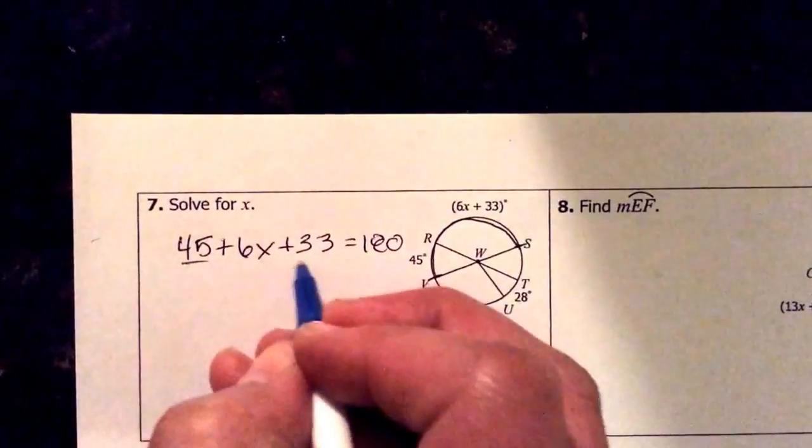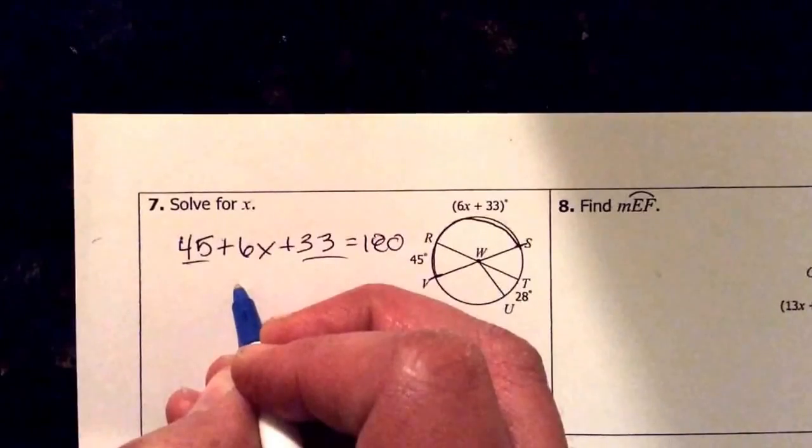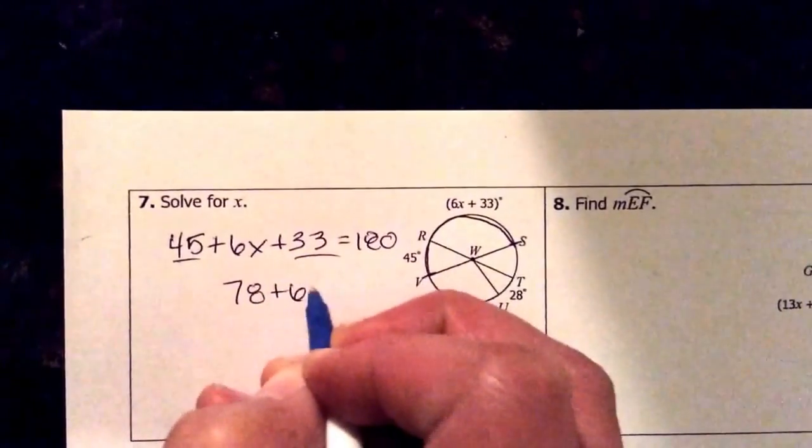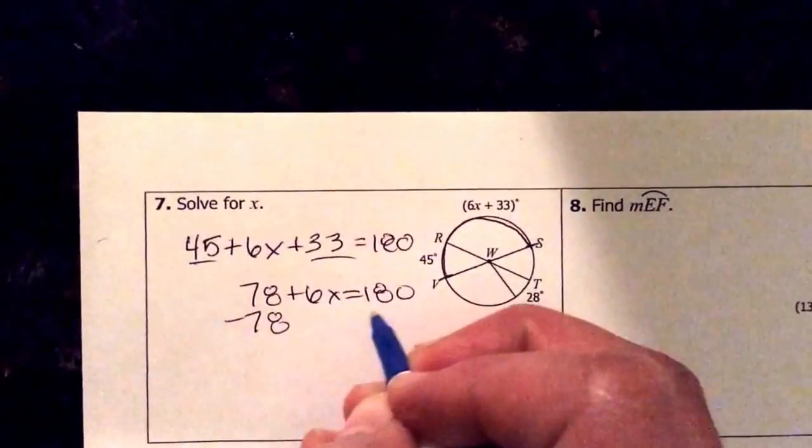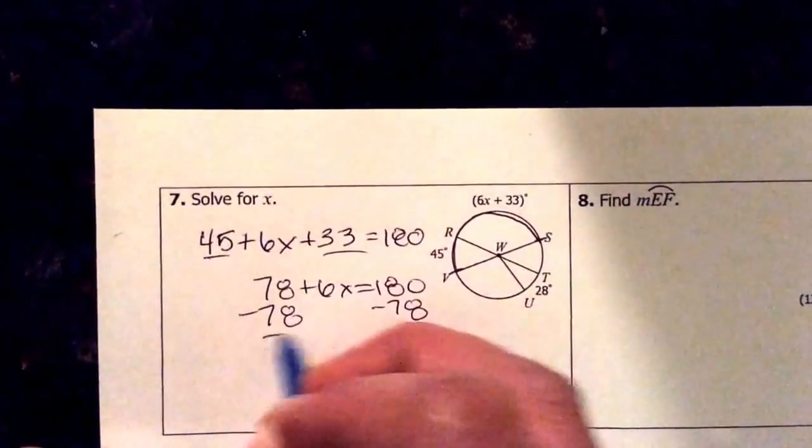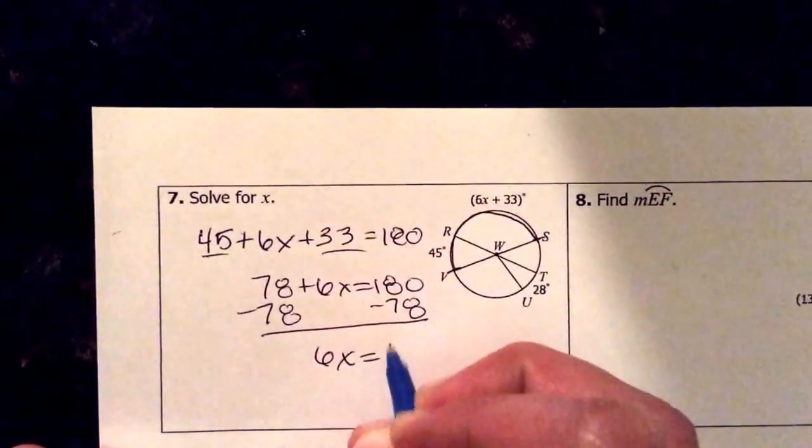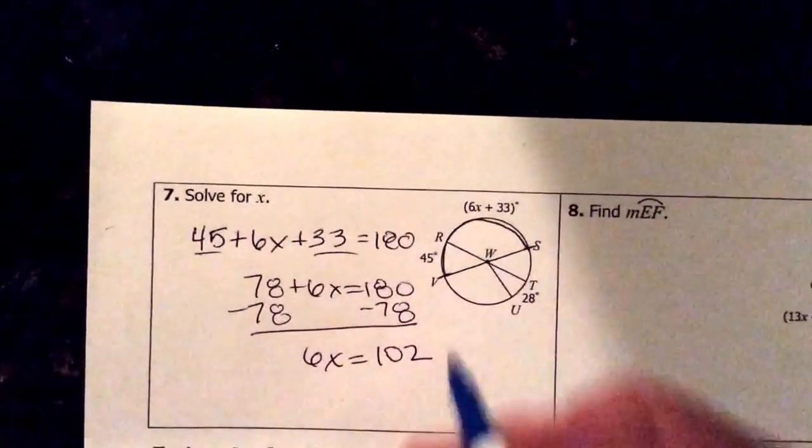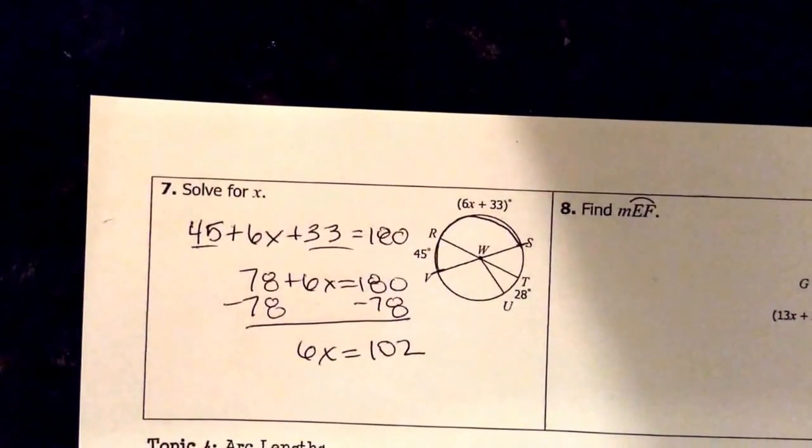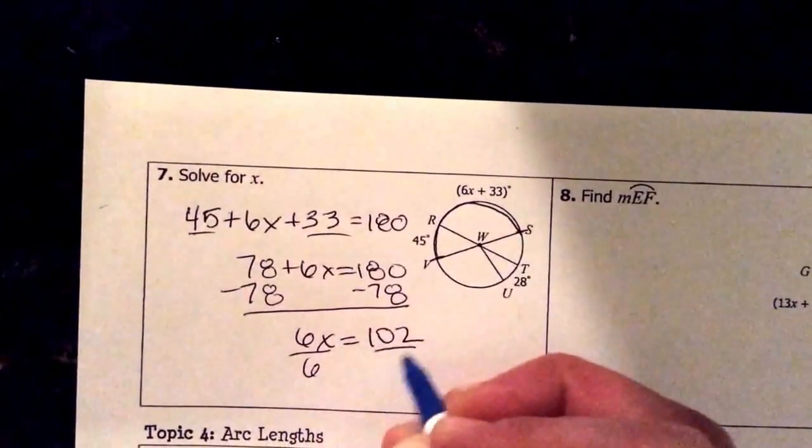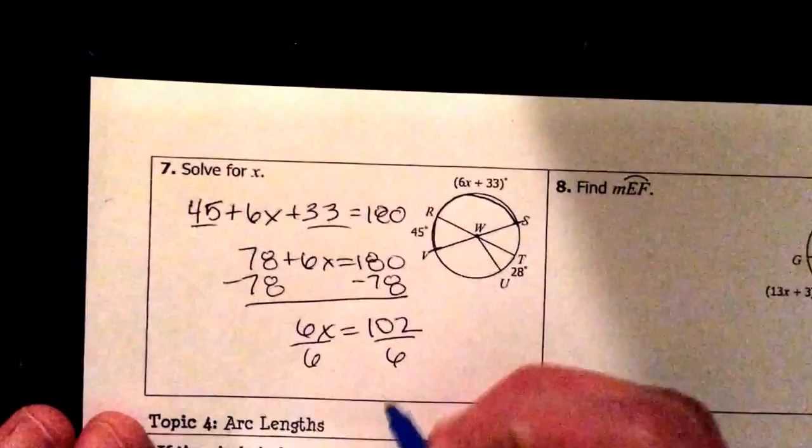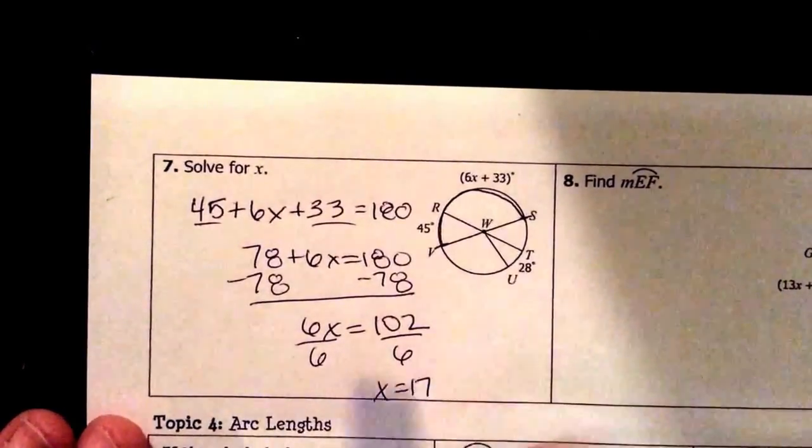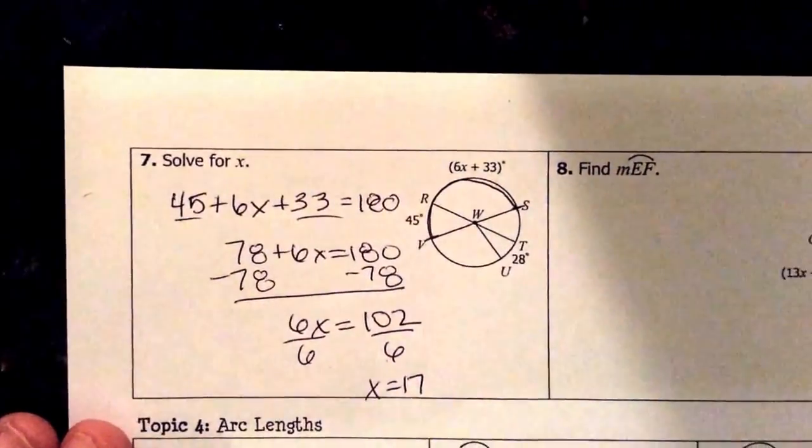Then I combine my like terms. 45 and 33 is giving me 78 plus 6x equals 180. I take away 78 from both sides. 6x equals 102. If I do 102 divided by 6 that equals 17. It says solve for x. I have x. Problem solved.